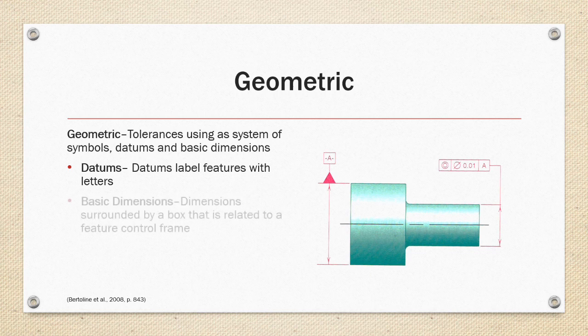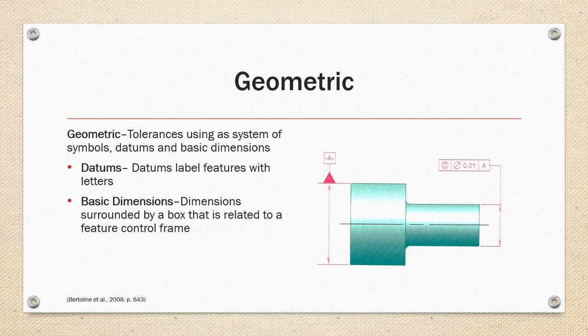Basic dimensions are surrounded by a box and denote a theoretical perfect size without tolerance and must be related to a feature control frame for tolerance information.